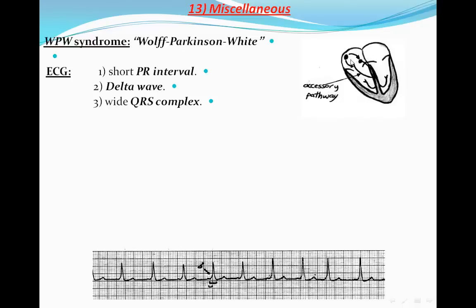This is the SA node, AV node, and the normal conducting system. But here is the accessory pathway, leading to bypassing of the normal conducting system, which will allow atrial stimulation to pass to the ventricles without the normal physiological delay happening in the AV junction. The ECG criteria to diagnose WPW syndrome are: short PR interval, delta wave, and wide QRS complex. But in cases of atrial fibrillation, we will not find the PR interval because the P wave is absent. So we can find the delta wave and the wide QRS complex.